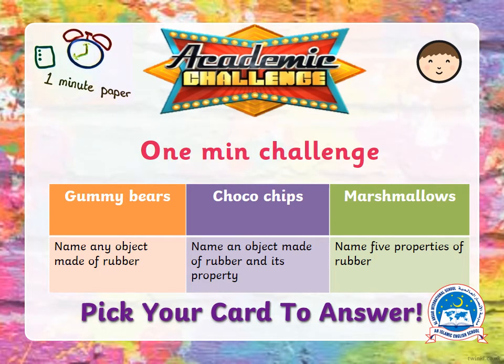Here is your challenge. We have different kinds of cards for each of you — you can pick your card and answer. The gummy bear card says: name any object made of rubber. The chocolate chip card says: name an object made of rubber and its property. The marshmallow card says: name five properties of rubber. You can pause here and choose which card you would like to answer.